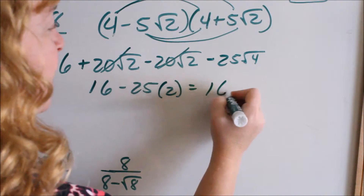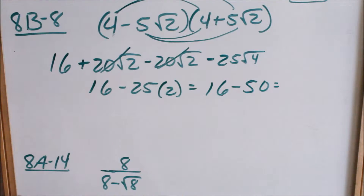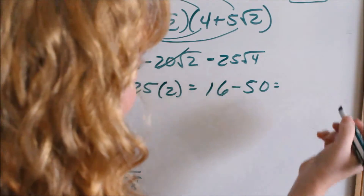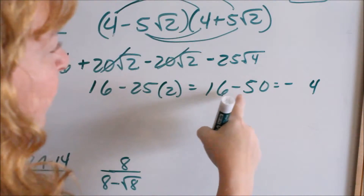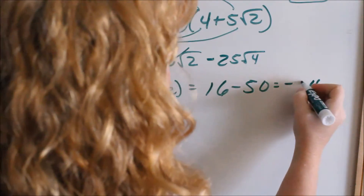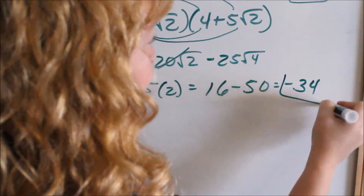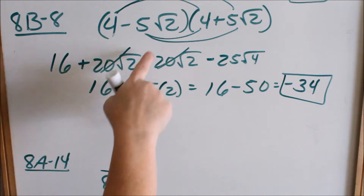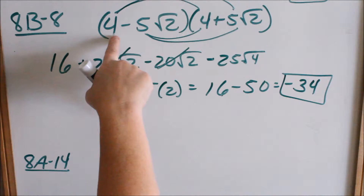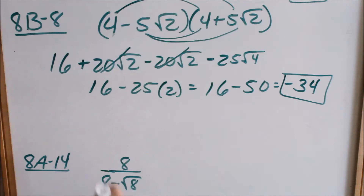Numbers to numbers, radicals to radicals — your middle terms go away. They should when you multiply conjugates. Then you have 16 minus 25. I'm going to go ahead and simplify square root of 4, which is just 2. So now you have 16, and 25 times 2 is 50 — so 16 minus 50 would be negative 34. So do you see how your radical went away? When you have conjugates with a number and a radical, your radicals will go away.